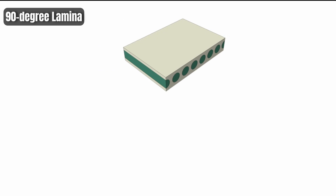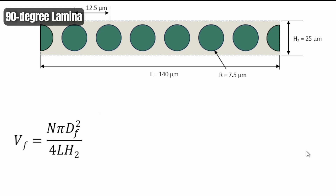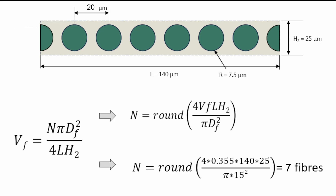A similar approach applies to the 90-degree laminate. The fiber distribution spans the full length of 140 microns, giving us seven fibers, with the same separation distance and dimensions: a length of 140 and a height of 25 microns. Following the same volume fraction calculation for the 90-degree laminate, we arrive at seven fibers.